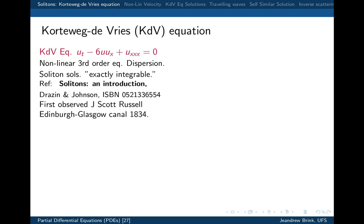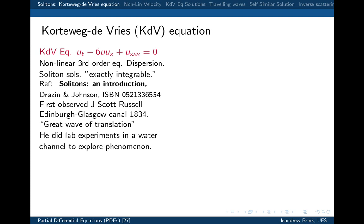To his surprise, the speed of the wave was roughly the speed of the horse, and it persisted. He could not explain this. Back then, observational science was tremendously acute and respected. It got published, and that was the beginning of solitons. He called it in his paper a 'great wave of translation' — instead of going splat, it just kept going. He was so fascinated by what he saw that he went back to the lab and tried to create an experiment to make a wave that would carry on going.